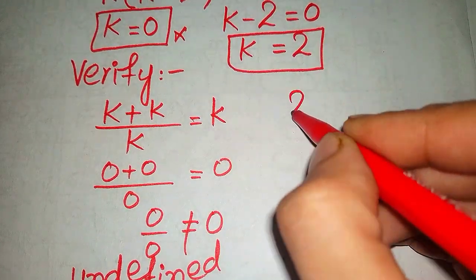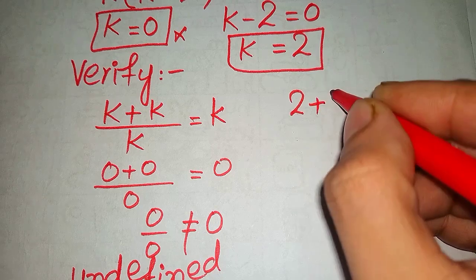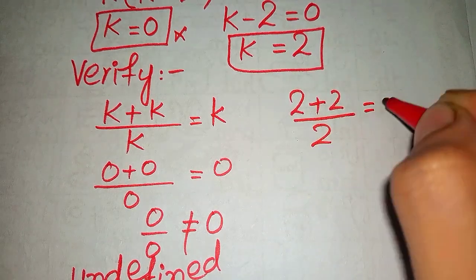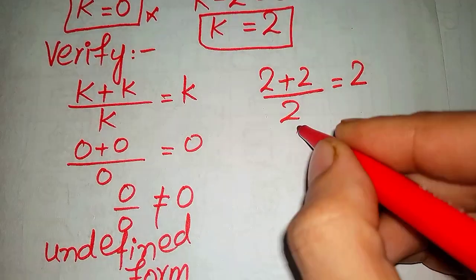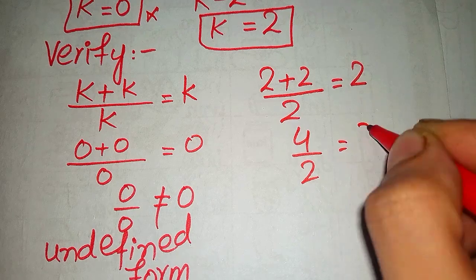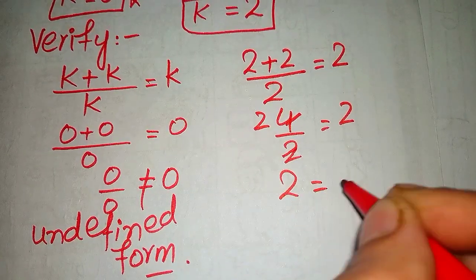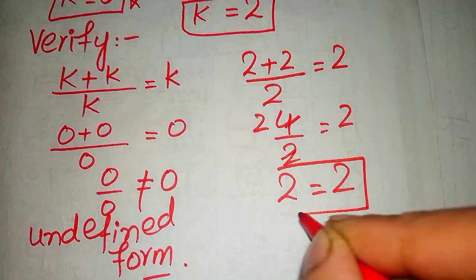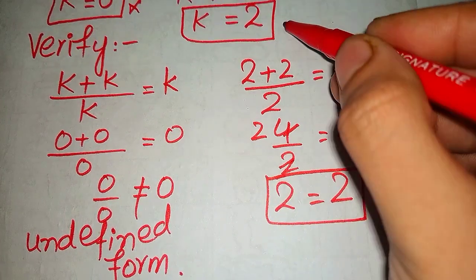Now we put k equals 2 into our equation: 2 plus 2 over 2 equals 2, which gives 4 over 2 equals 2, and 2 equals 2. We can say that k equals 2 is true for our given equation.